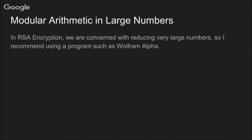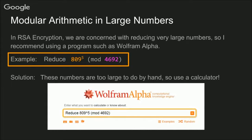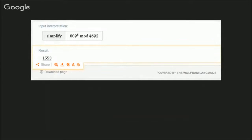However, in the RSA algorithm, we'll be using absolutely massive numbers. At that point, we need to use a calculator to solve these problems. And I recommend Wolfram Alpha because it's free and powerful. So here's another sample problem. Since these numbers are too large to reasonably calculate by hand, we'll simply ask Wolfram Alpha to do it for us. And Wolfram Alpha just gives us the answer. So we know that 809 to the 5 is congruent to 1553 mod 4692, thanks to Wolfram Alpha.